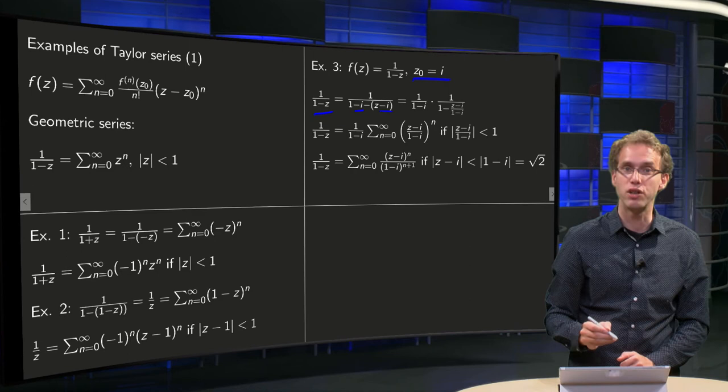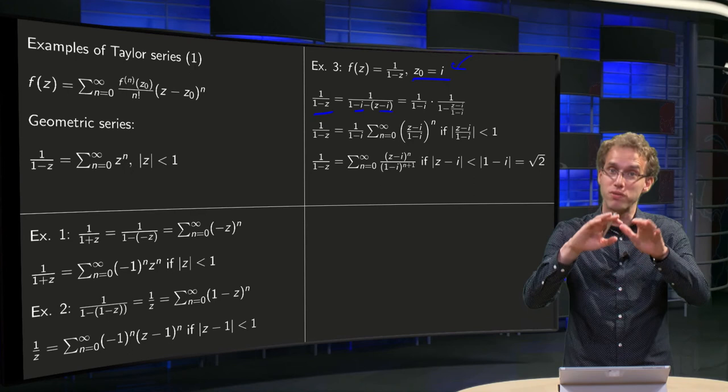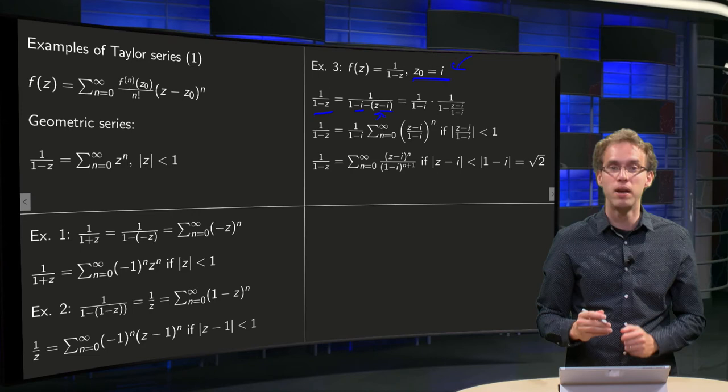So we get 1/((1-i)-(z-i)). Because we want to expand around z0 = i. So we want to have powers of (z-i) to some power. So here we have our z-i.